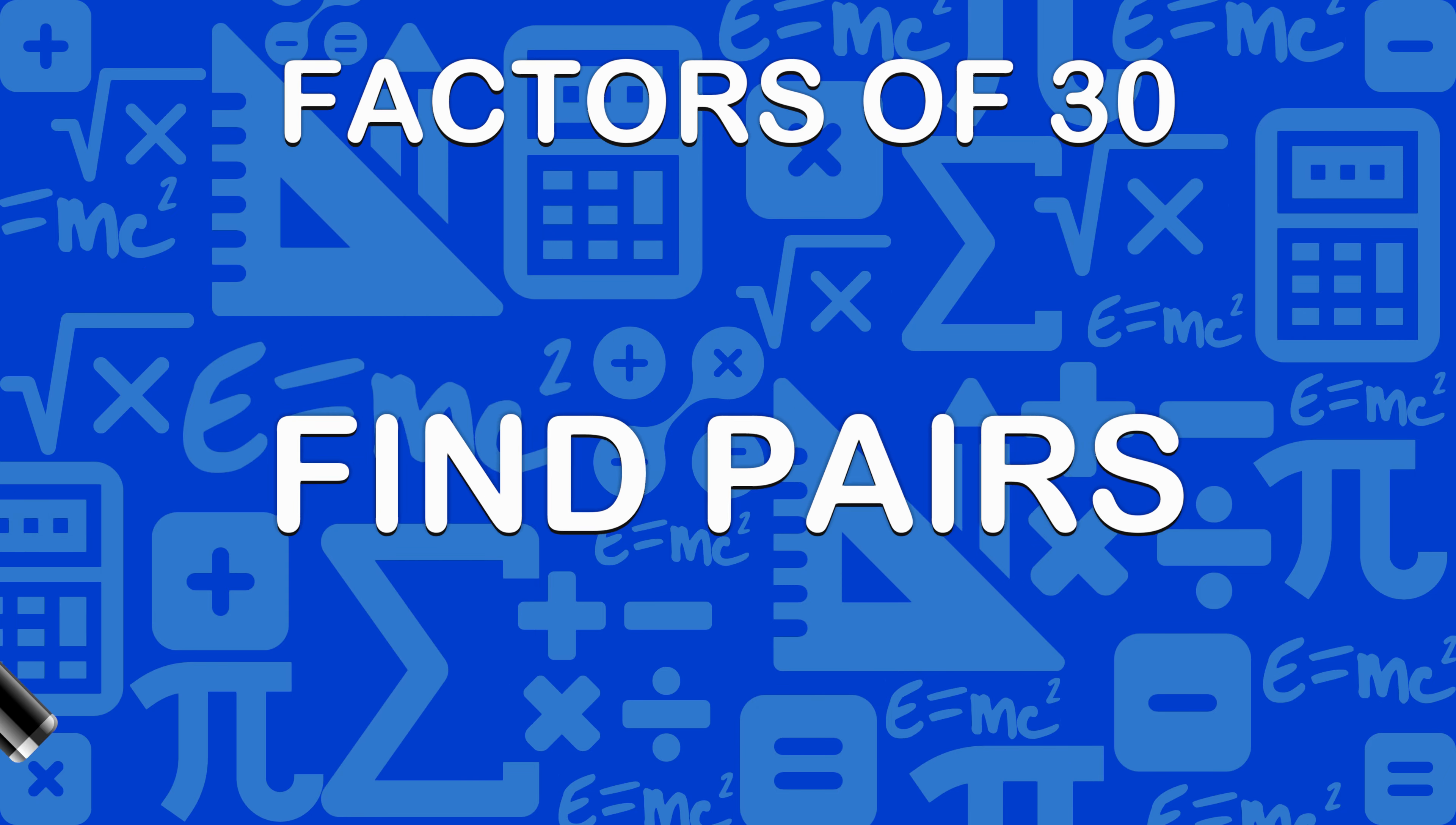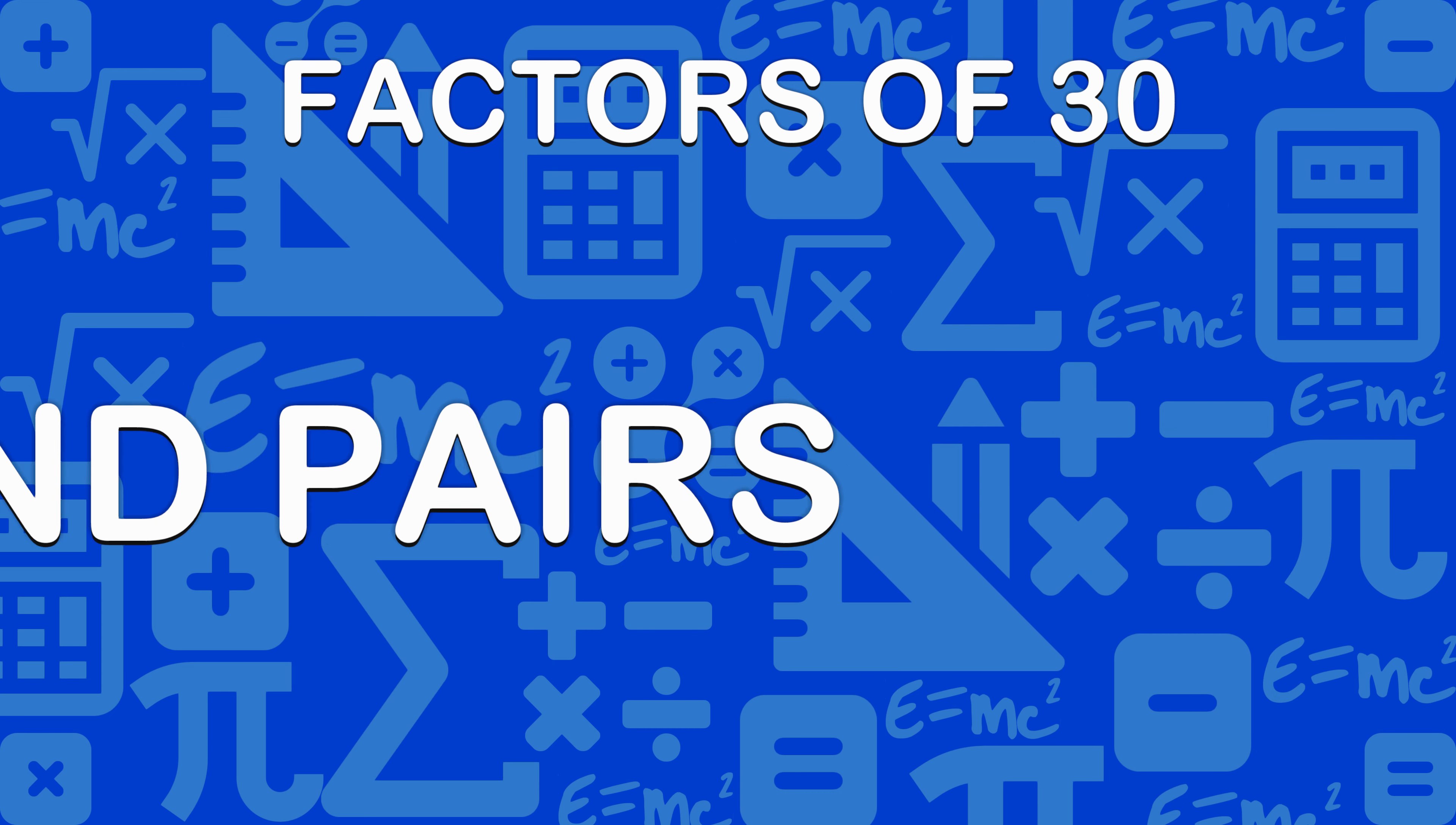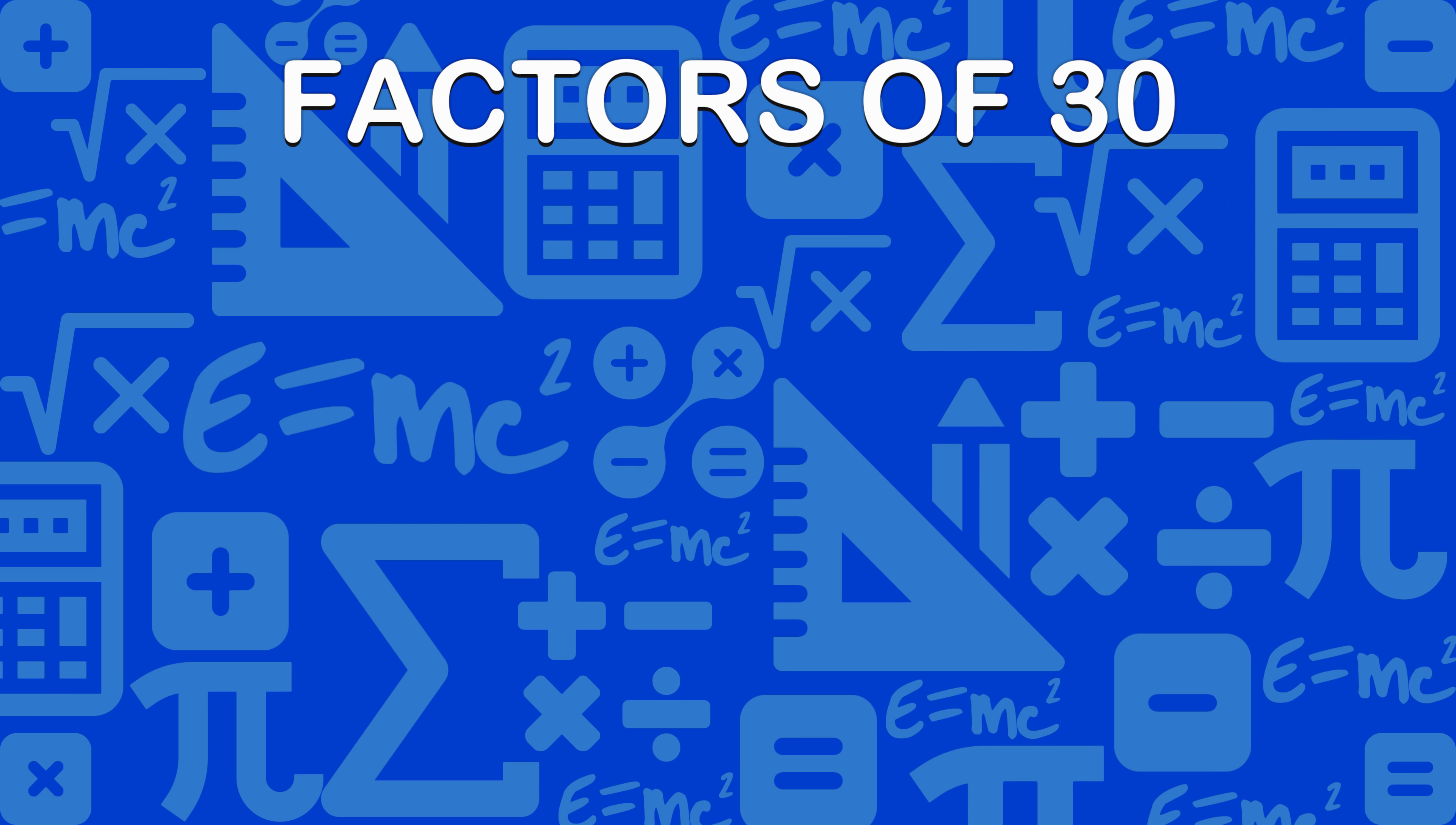Firstly, we will find pairs of factors. Pairs are numbers that multiply to given number. Here are pairs of factors of 30: 1 and 30, 2 and 15, 3 and 10, 5 and 6.